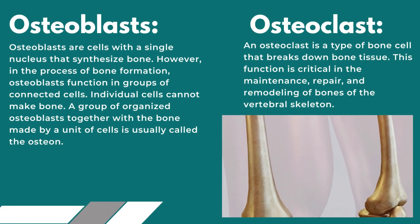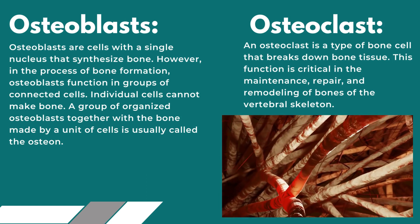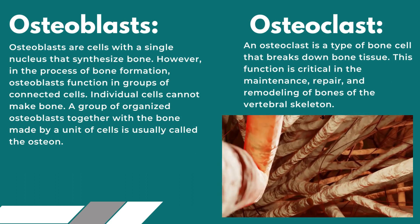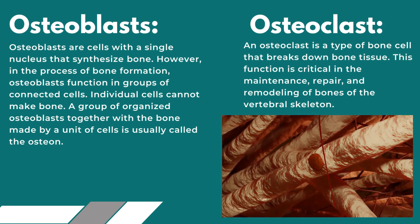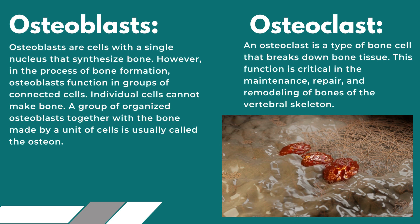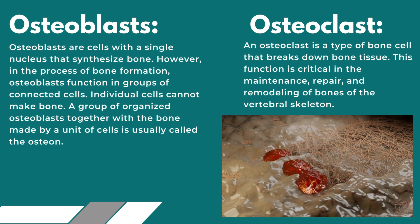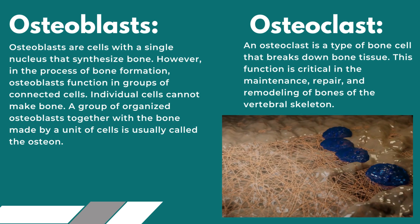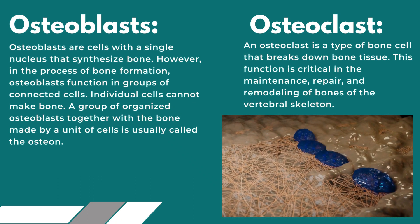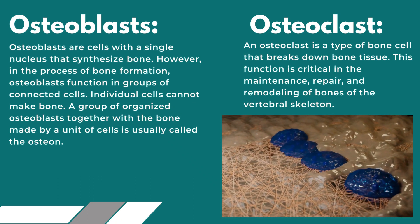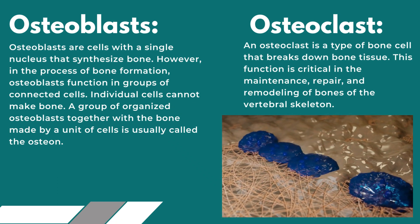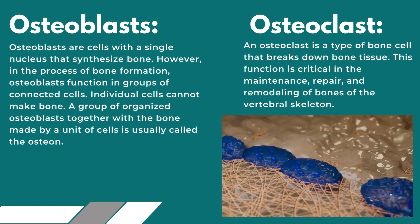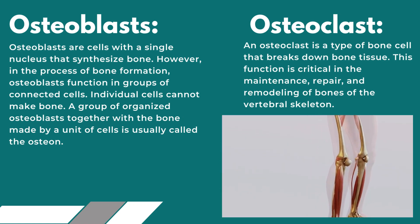Osteoblasts are cells with a single nucleus that synthesize bone. However, in the process of bone formation, osteoblasts function in groups of connected cells. Individual cells cannot make bone. A group of organized osteoblasts together with the bone made by a unit of cells is usually called the osteon.